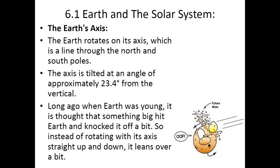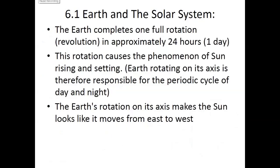Scientists have a theory that long ago when Earth was young, something big hit Earth and knocked it off a bit, like an asteroid maybe. Instead of rotating with its axis straight up and down, it leans over a bit. Ever since then, the Earth completes one full rotation or revolution in approximately 24 hours, known as one day. This rotation causes the phenomenon of sun rising and setting.